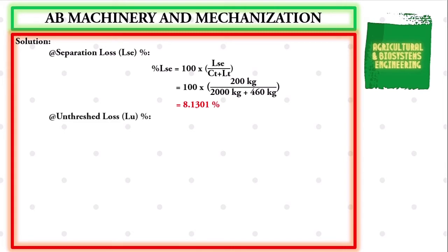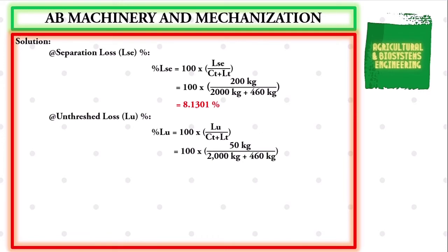The next value is the unthreshed loss in percentage. The formula is: 100 multiplied by the quotient of unthreshed loss in kilograms over the sum of the clean threshed grain added to the total loss, both in kilograms. Substituting: 100 × 50 kg / (2000 kg + 460 kg), giving a final value of 2.0325%.